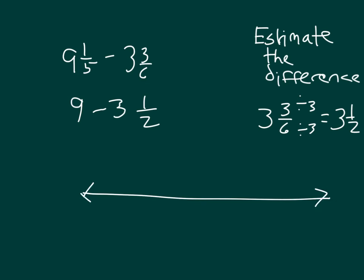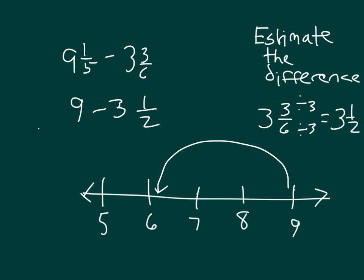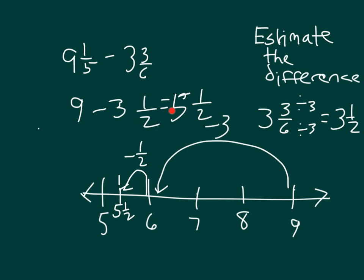Let's use a number line to figure out 9 minus 3 and 1 half. We mark 9 because we're subtracting from 9. We're subtracting 3 and also another 1 half, so we go down to 8, 7, 6, and 5. We subtract 3 first, then subtract the half — breaking between 5 and 6 at the half — and we end up at 5 and 1 half. So 9 minus 3 and 1 half equals 5 and 1 half, which is our estimate for 9 and 1 fifth minus 3 and 3 sixths.